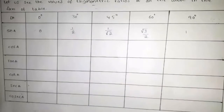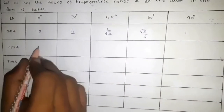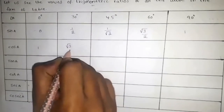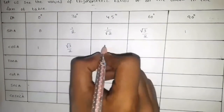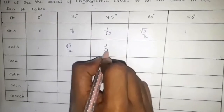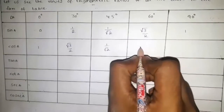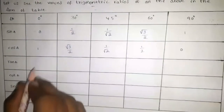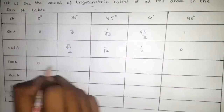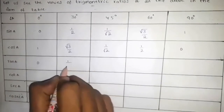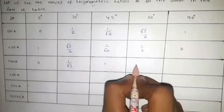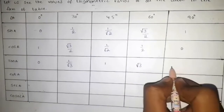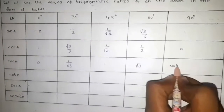Cos 0° = 1, cos 30° = √3/2, cos 45° = 1/√2, cos 60° = 1/2, cos 90° = 0. Tan 0° = 0, tan 30° = 1/√3, tan 45° = 1, tan 60° = √3, tan 90° = not defined.